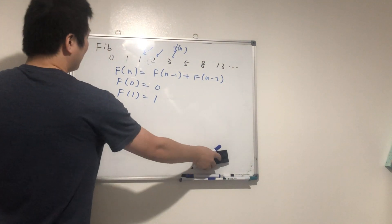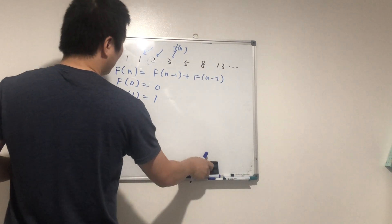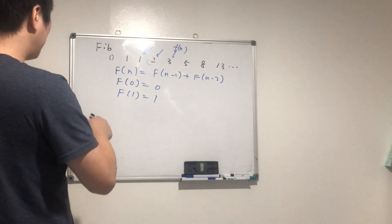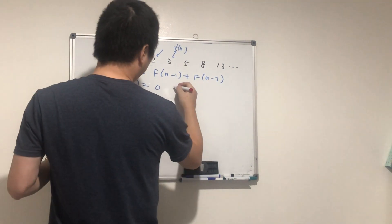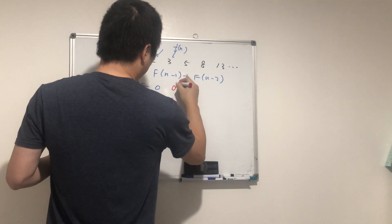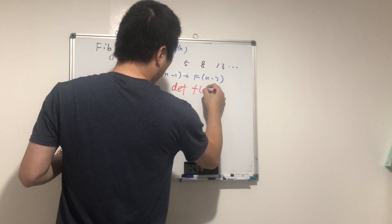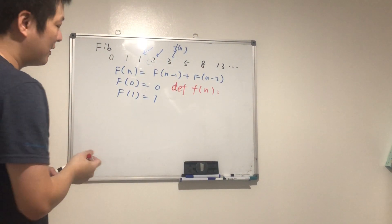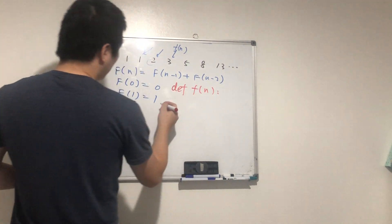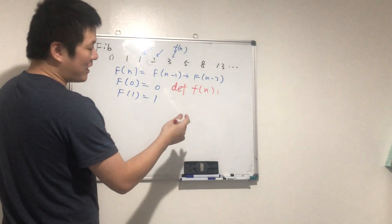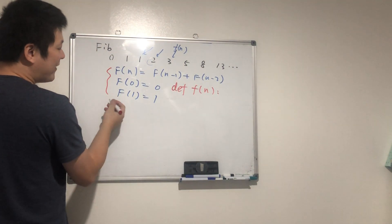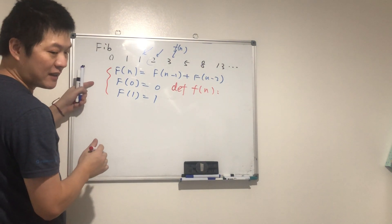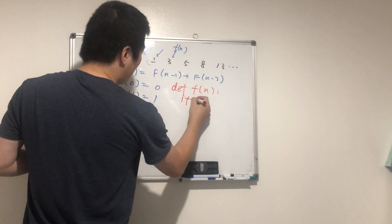So how can we implement this using a computer? We'll use 'f' for Fibonacci — it's quicker. It needs to work for all n. It's actually very easy because we've already defined those base cases. We just need to do this: if n equals zero...